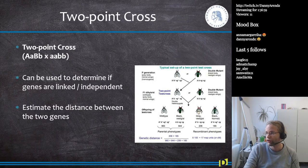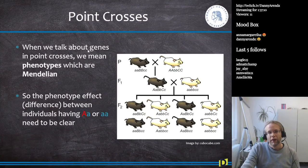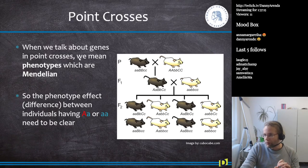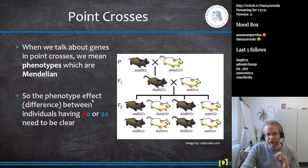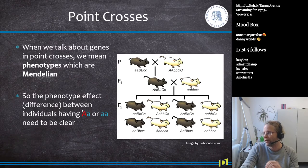A two-point cross allows you to do two things: determine if two genes are on the same chromosome or on different chromosomes, and estimate the distance between them. When we talk about genes in point crosses, we actually mean phenotypes — Mendelian phenotypes. There has to be an observable difference between individuals that are AA versus small-a small-a, and this difference needs to be clear. If there's no real phenotypic difference, we cannot do this.